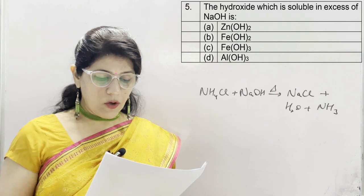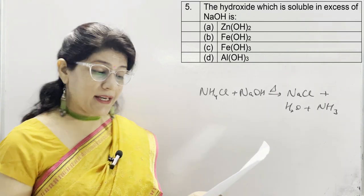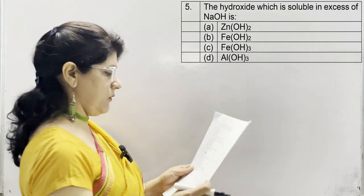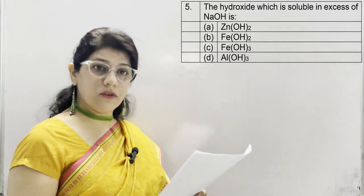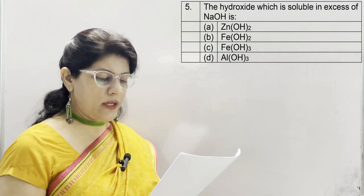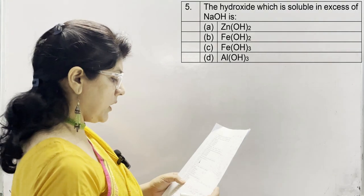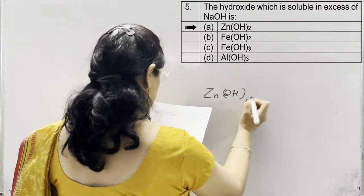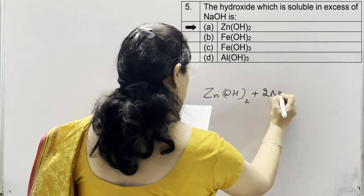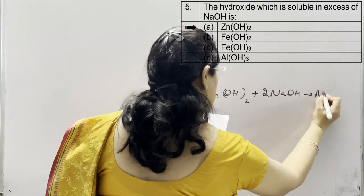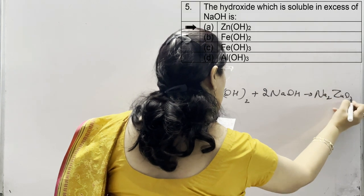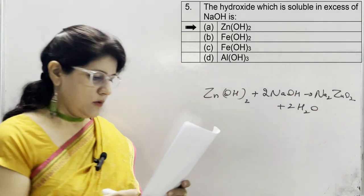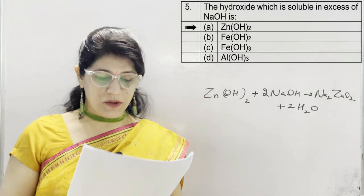Question 5: which hydroxide is soluble in excess NaOH? Options given are zinc hydroxide, ferric hydroxide, ferrous hydroxide, and aluminium hydroxide. The correct option is zinc hydroxide. The reaction is: zinc hydroxide + NaOH gives Na₂ZnO₂ (sodium zincate) and 2 molecules of water. So the correct option is A.